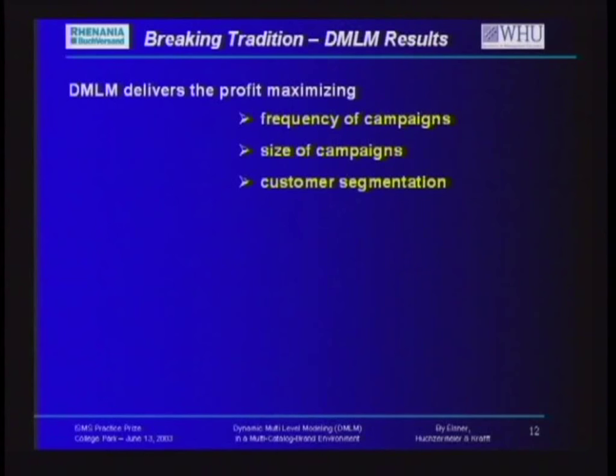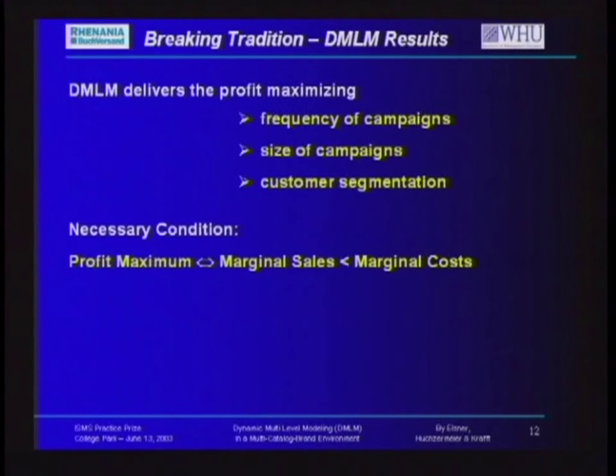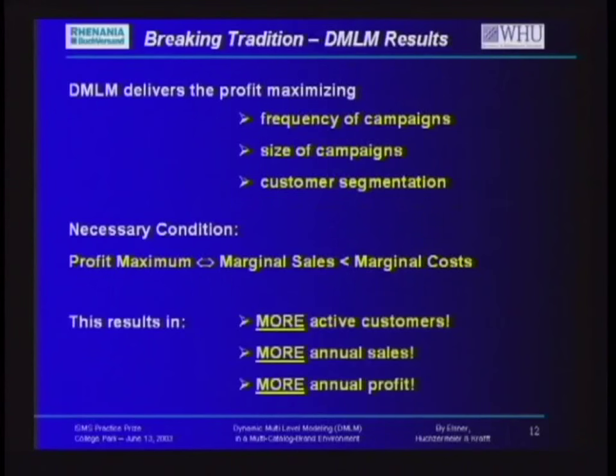DMLM gave us one major insight: you can only reach the profit maximum if customer segments with marginal sales lower than their marginal costs are included. This means you lose money at first to reach the maximum profit. As I went with this result to the former CEO, I was thrown out of the office. He said to pack my DMLM stuff and come back with a better idea. I had to come back with the same idea to a different CEO, because the old one got fired. And the new one said 'let's give it a try.' This resulted in more active customers, more annual sales, and more annual profit.